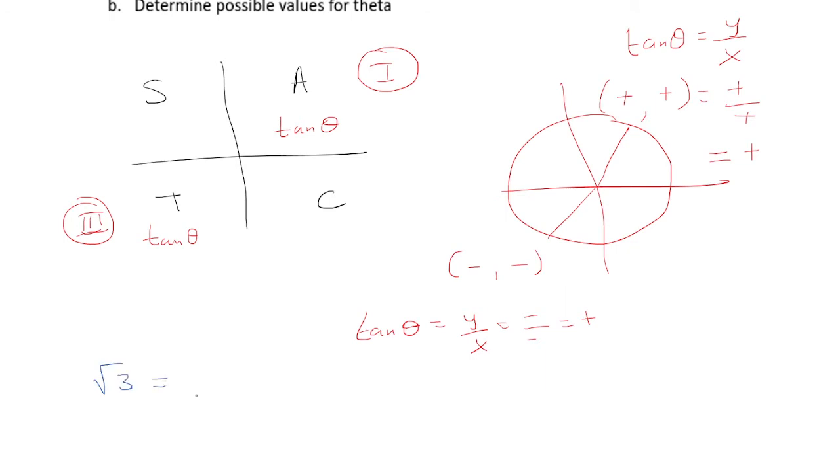We can write this as a fraction over a fraction. Well, first, let's write it this way: square root of 3 is equal to square root of 3 over 1. This, we know for sure, is true.